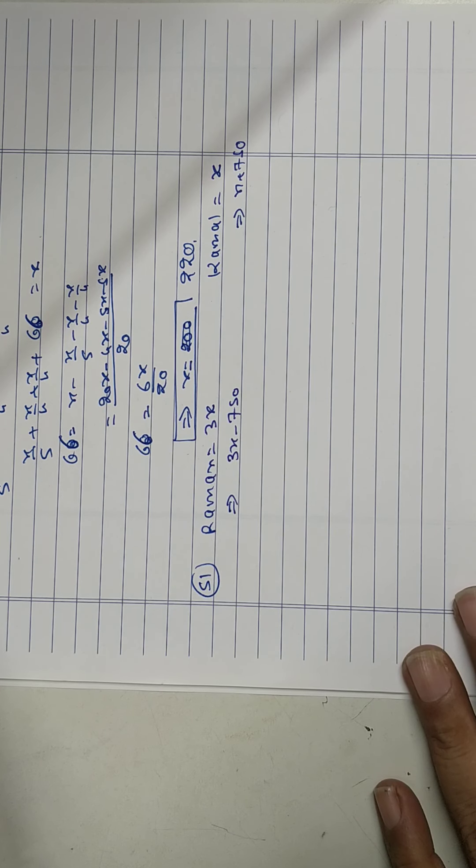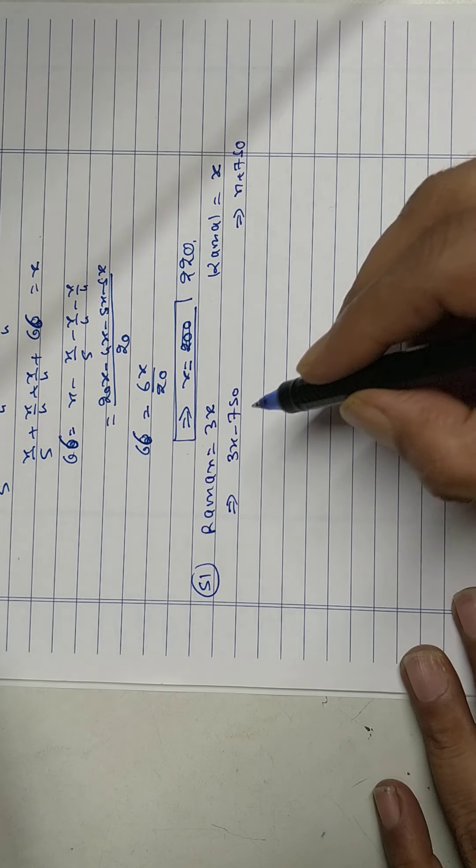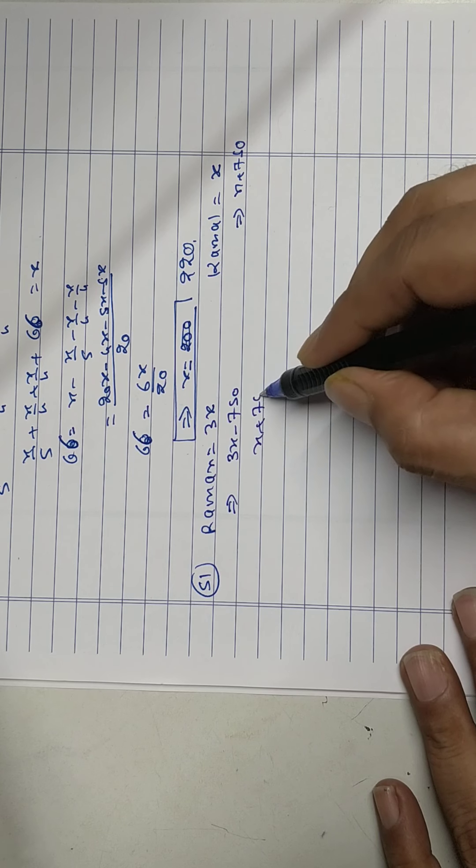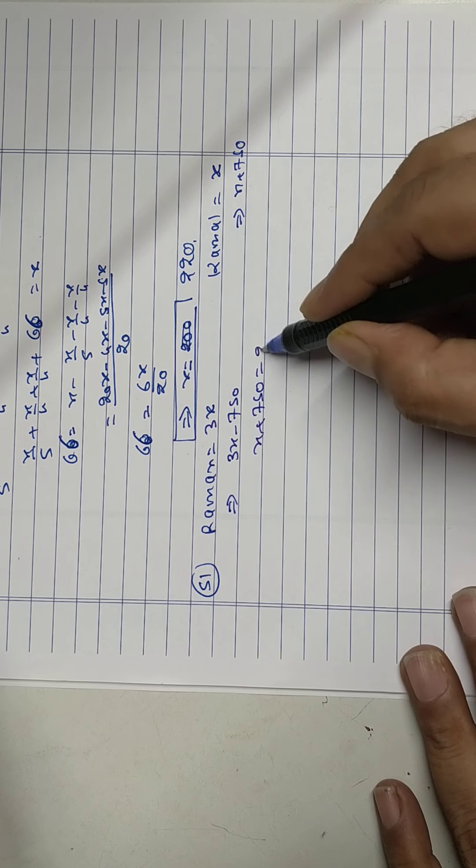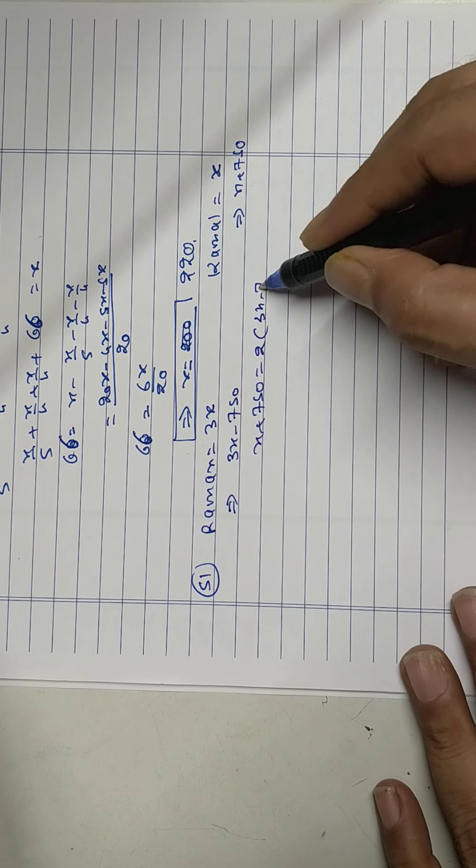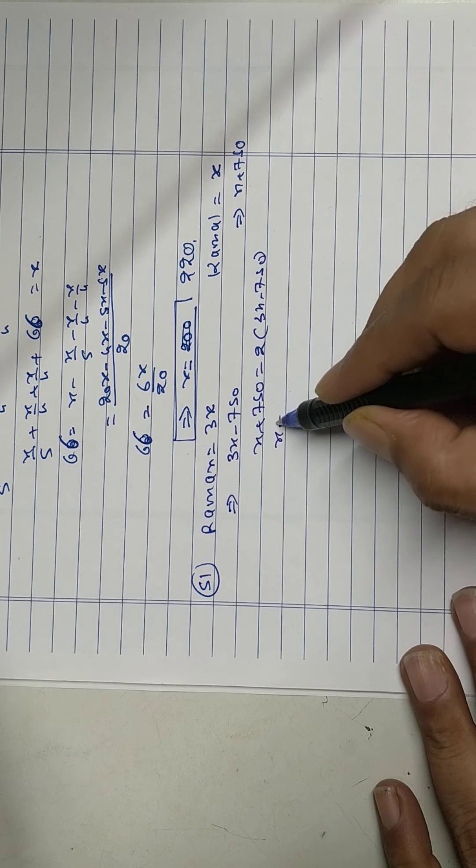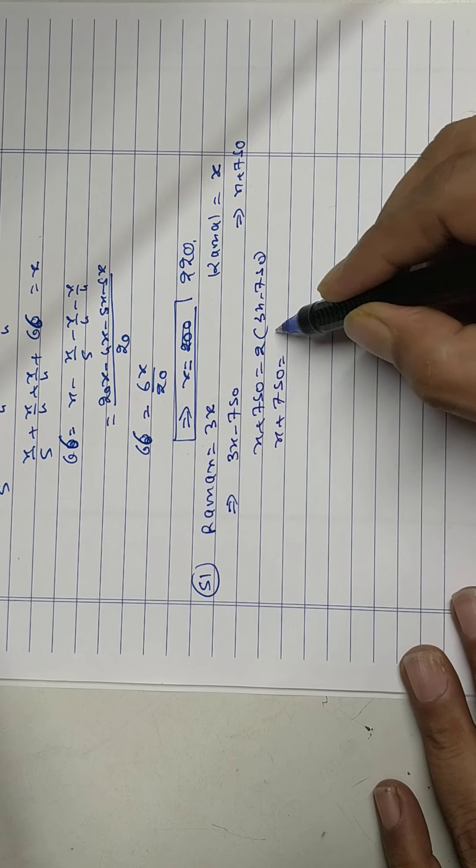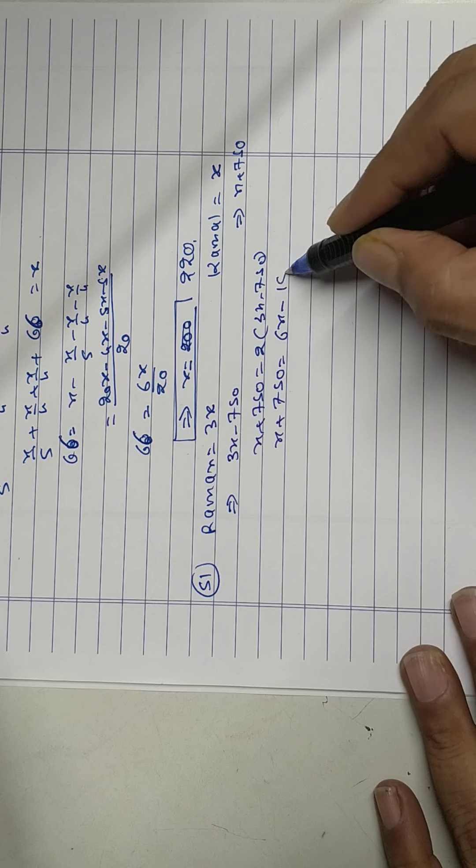Now Kamal will be twice as much as Raman. So Kamal equal to twice Raman. 6x minus 1500.